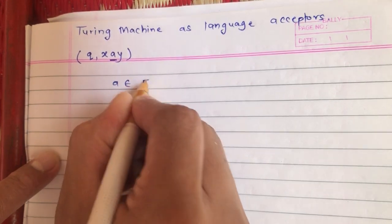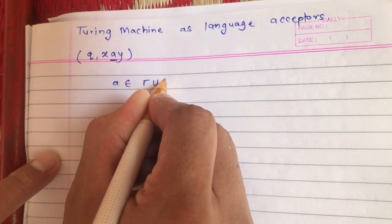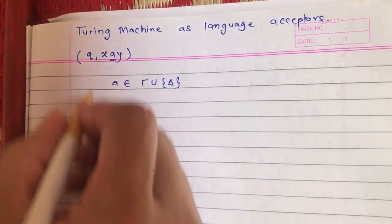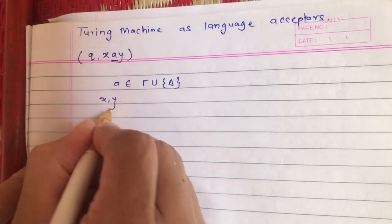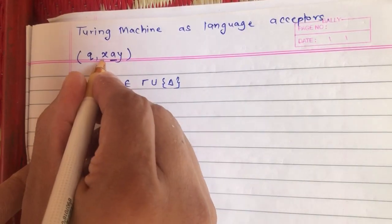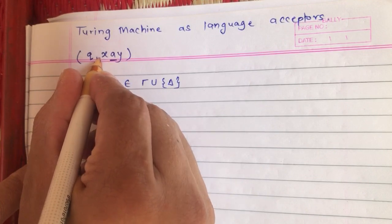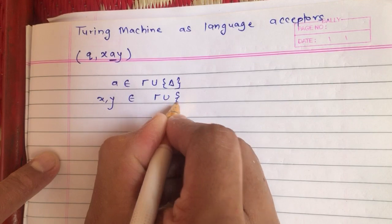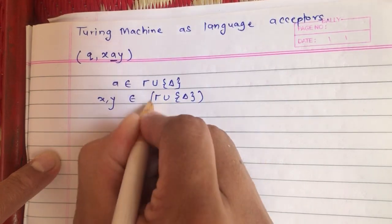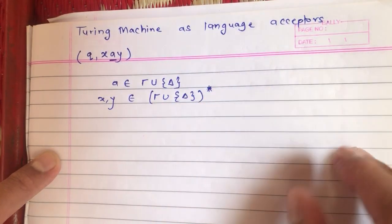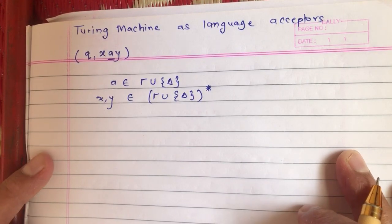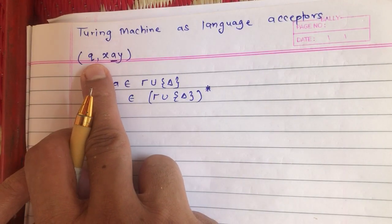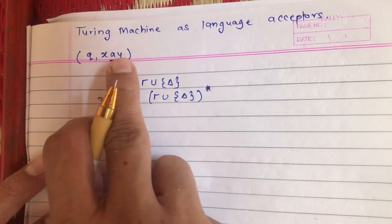A is a symbol from the tape — it can be a tape symbol or it can be blank. x and y are strings, because x and y can each have some number of symbols from the tape. So x and y are strings over tape symbols and blank. This is how the ID notation representation is shown in case of a Turing machine.